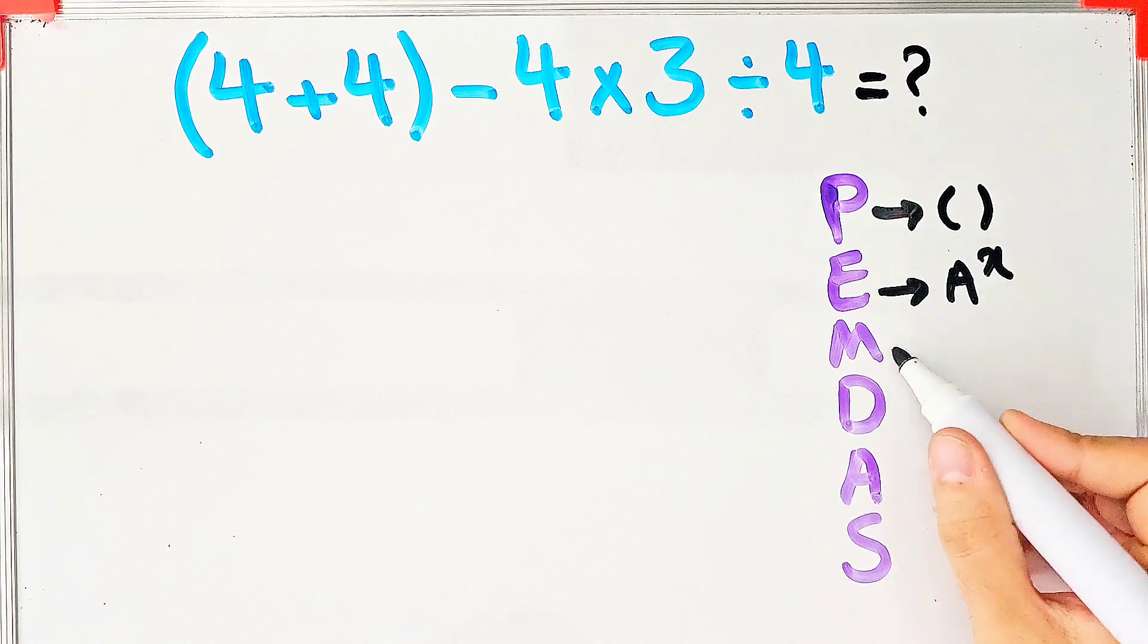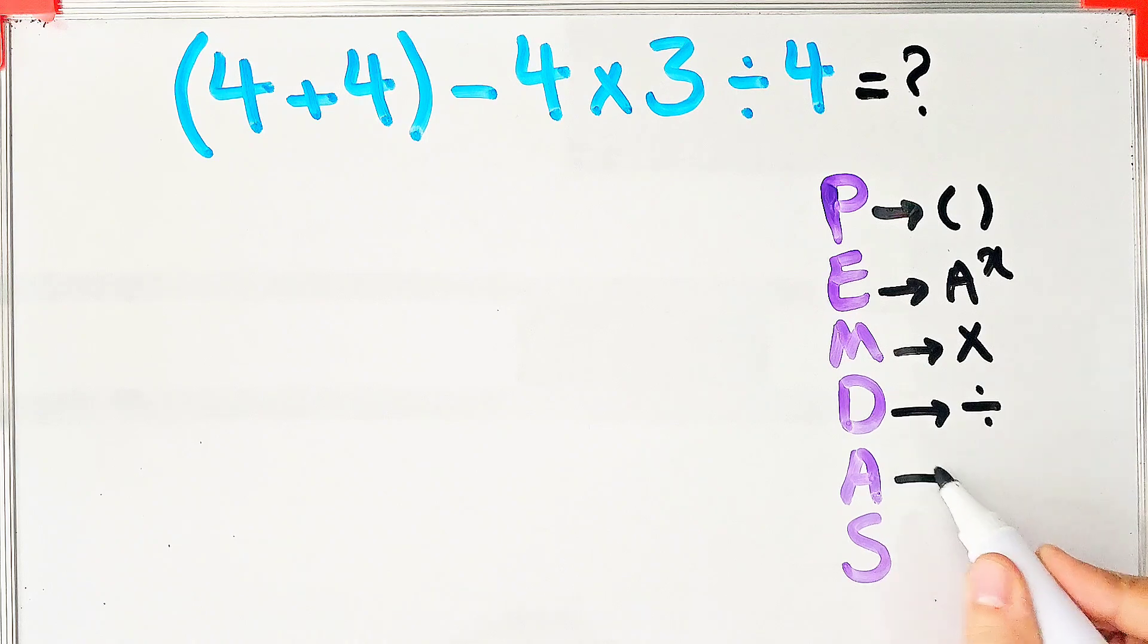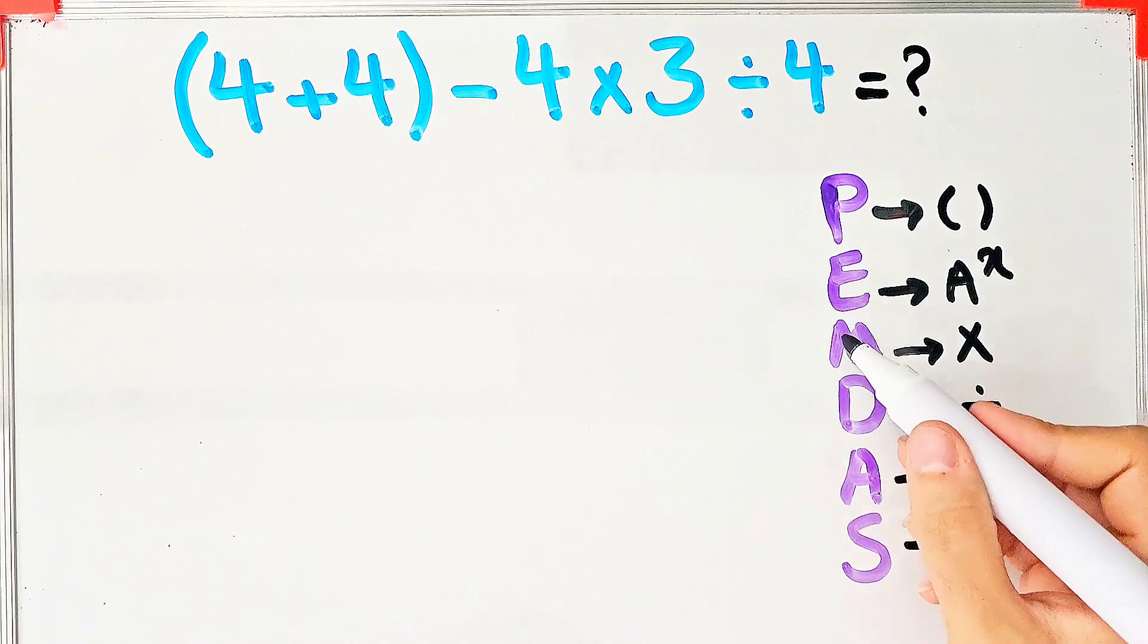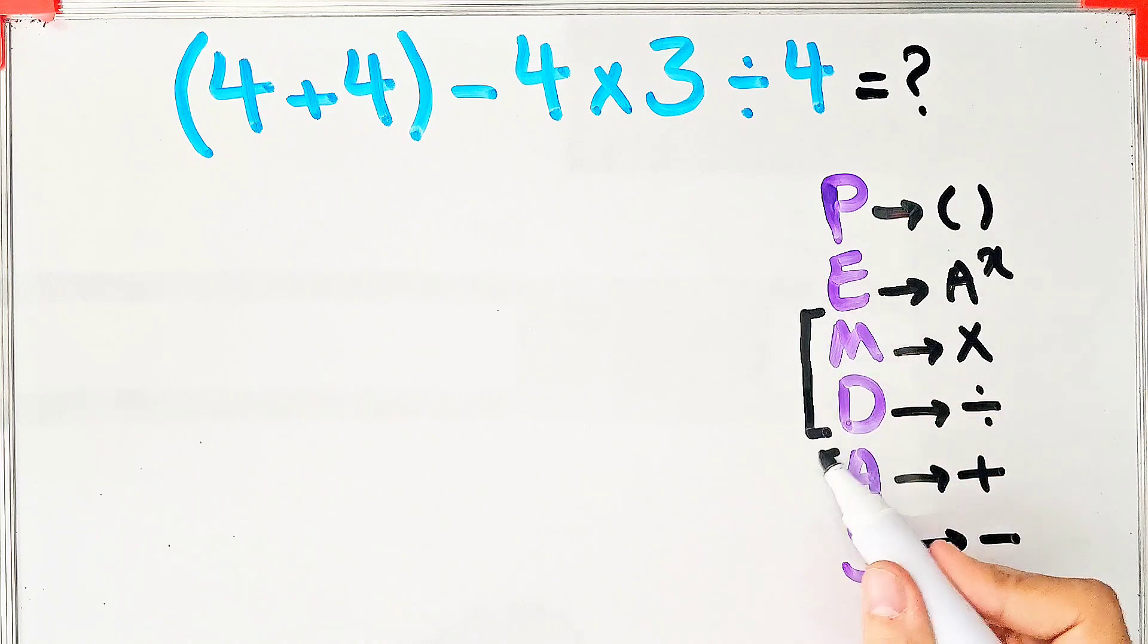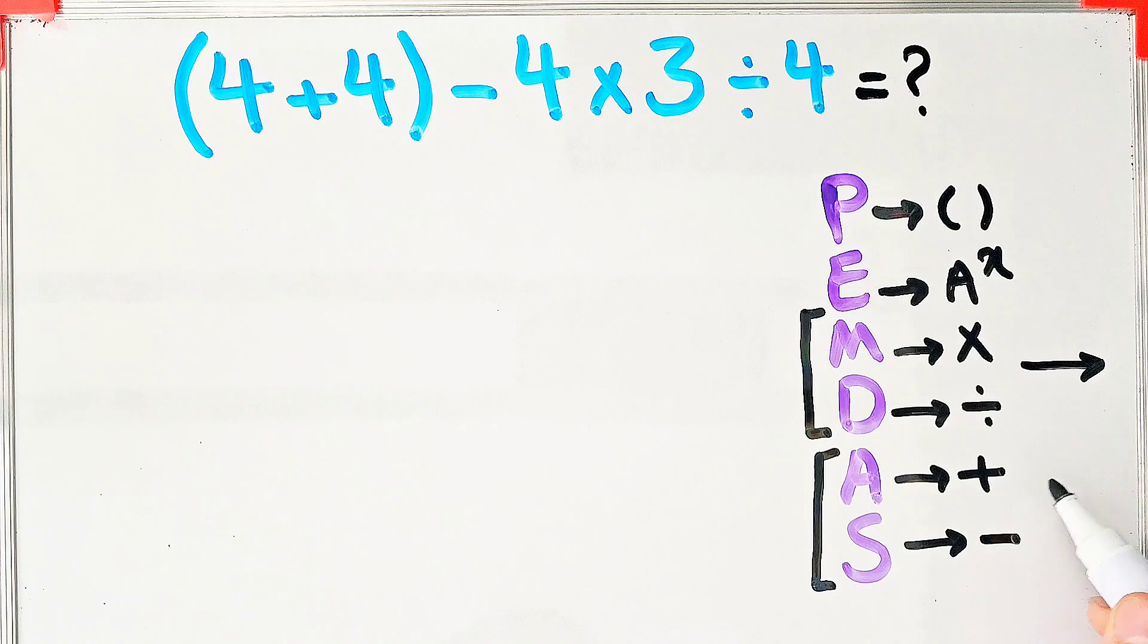Multiplication and division have the same level of priority. Also addition and subtraction have the same priority. When we have both in an expression, we start from the left and simplify.